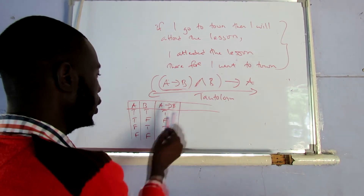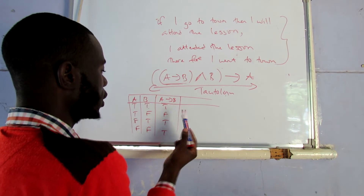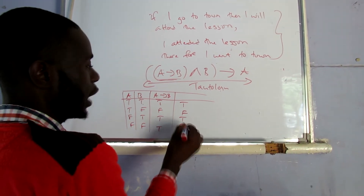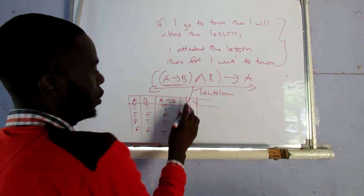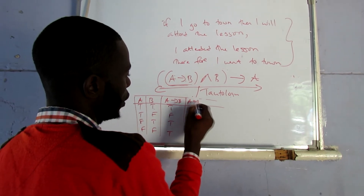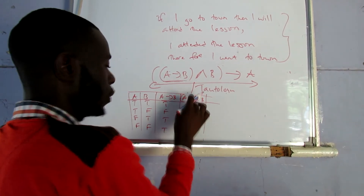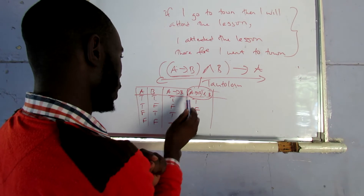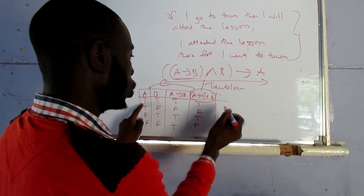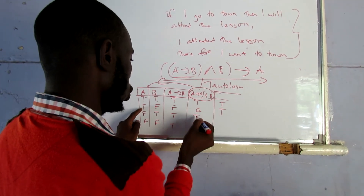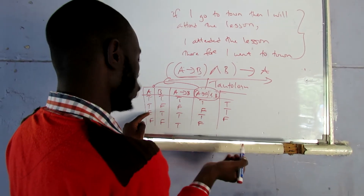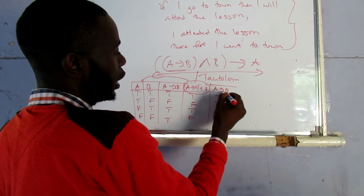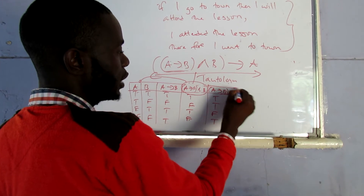Now this one - conjunction with B - so we are multiplying since this is a conjunction. So A implies B and B: T and T is T, F and F is F, T and T is T, F and T is F. So for this statement, A implies B conjunction with B, we have this result. Now we want to say this implies A. True implies true is true, false implies true is true, true implies false is false, false implies false is true. As you can see, this statement is not a tautology.